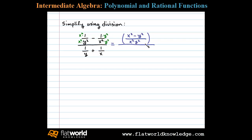Now let's do the same thing in the denominator. The LCD between x and y is x times y, so we'll multiply numerator and denominator by x, and numerator and denominator by y. That leaves us with x plus y over x times y in the denominator.